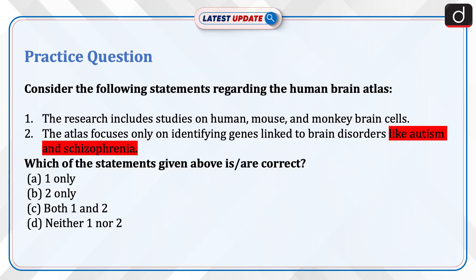Now it's time to do a practice question. Consider the following statements regarding the Human Brain Atlas. Statement 1: The research includes studies on human, mouse, and monkey brain cells. Statement 2: The atlas focuses only on identifying genes linked to brain disorders like autism and schizophrenia. Which of the statements given above is correct? A. One only. B. Two only. C. Both 1 and 2. D. Neither 1 nor 2.